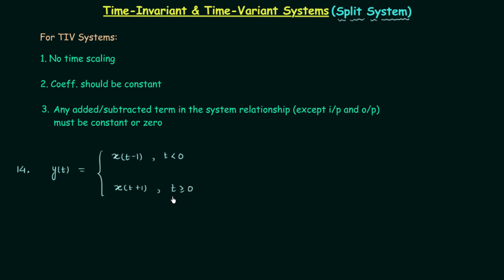So when t is 0 or positive, y(t) equals x(t+1), and when t is negative, y(t) equals x(t−1). You can see there is a condition on time, and whenever there is a condition on time the system is known as a split system. We are interested in finding out if this split system is time invariant or time variant, and for this we will check whether the three conditions are satisfied.